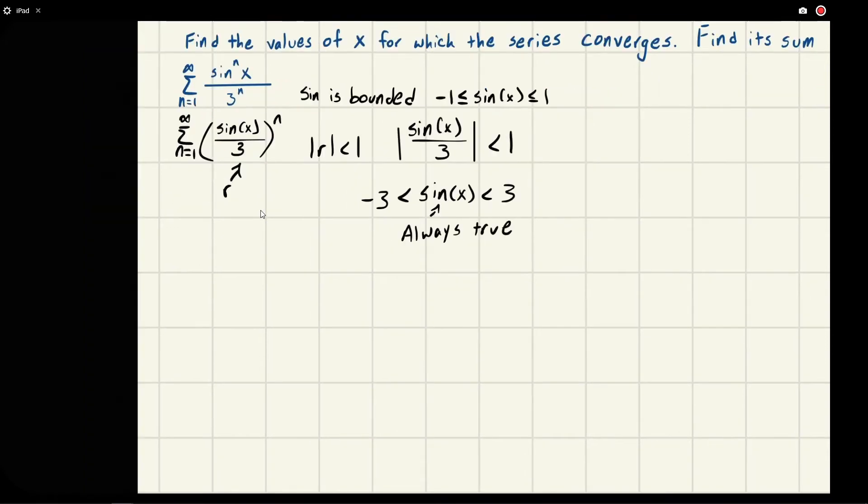We already know that this is always true. And so because of this, we say that the interval of convergence of x is between negative infinity and infinity—no x will be out of bounds.